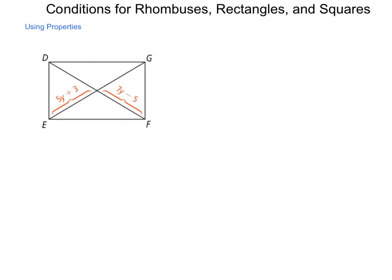What we need to know is what value for the variable y would make it so this actually is a rectangle and not some other parallelogram. With the theorems that we have, this will be a rectangle only when those diagonals are congruent to each other.